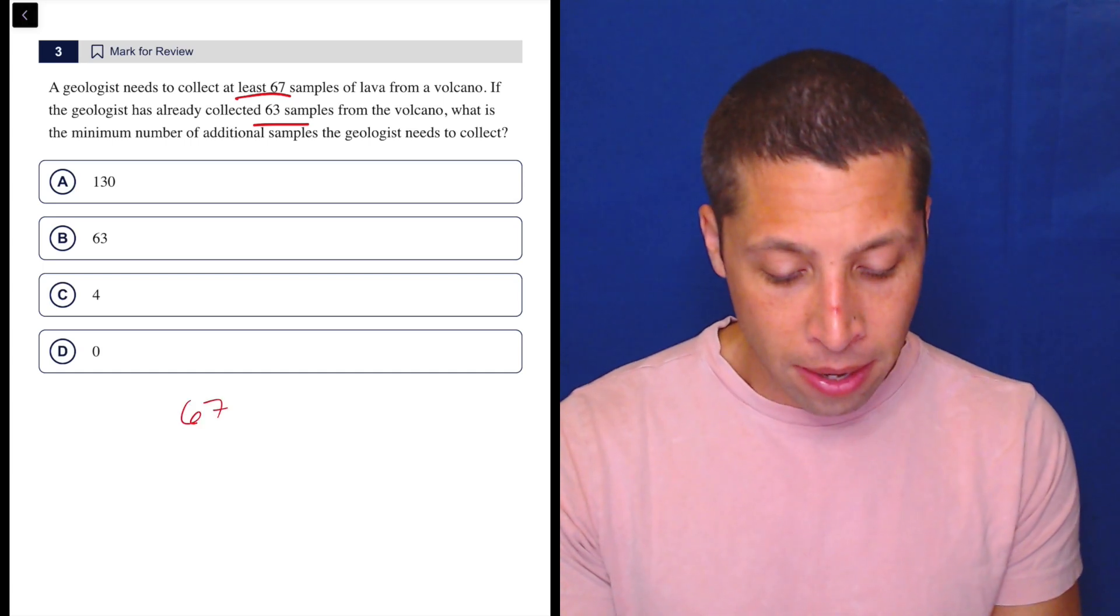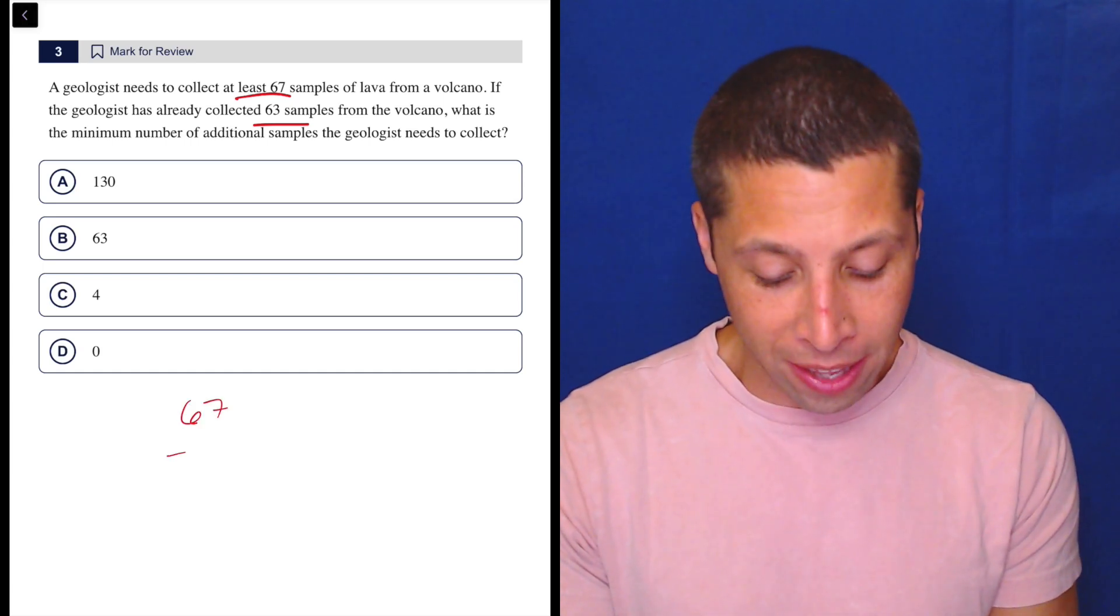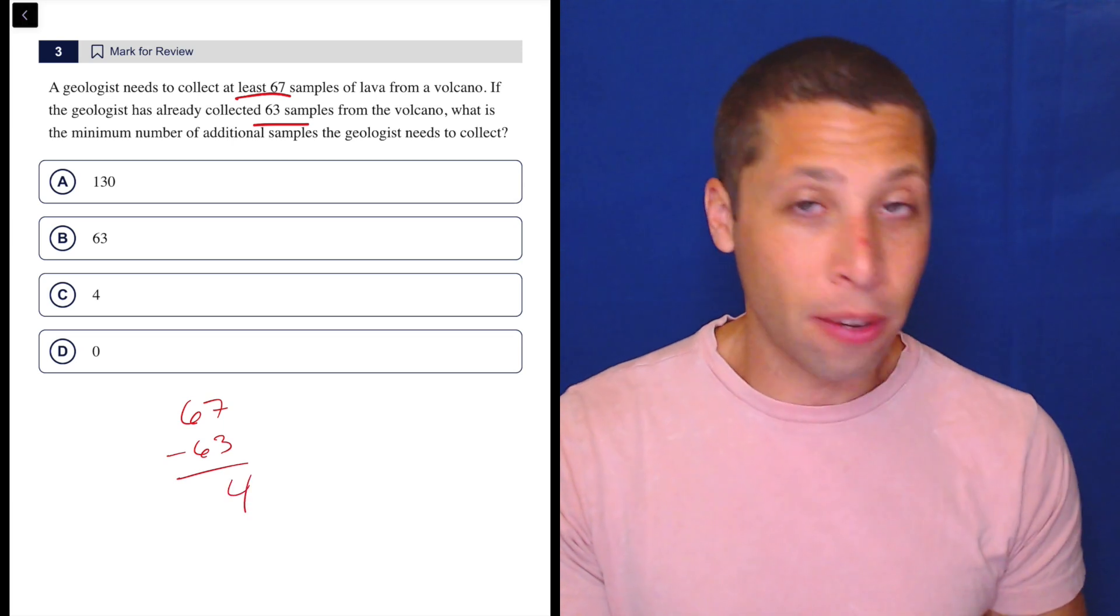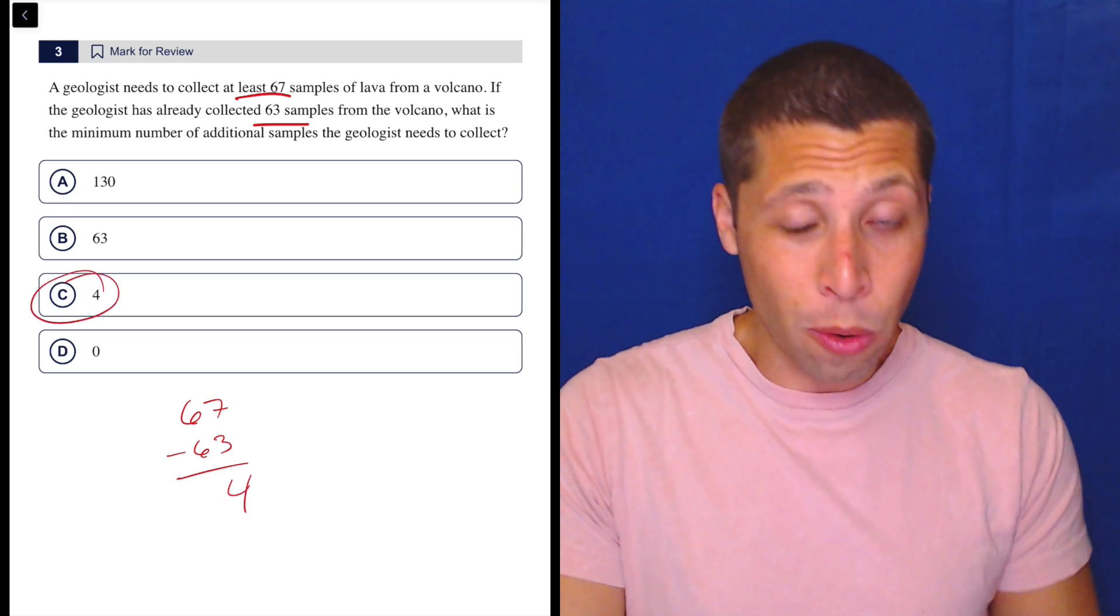Well, if they have 67, or sorry, if they want 67 and they have 63, that means they need four more. That's it. That's literally the whole question.